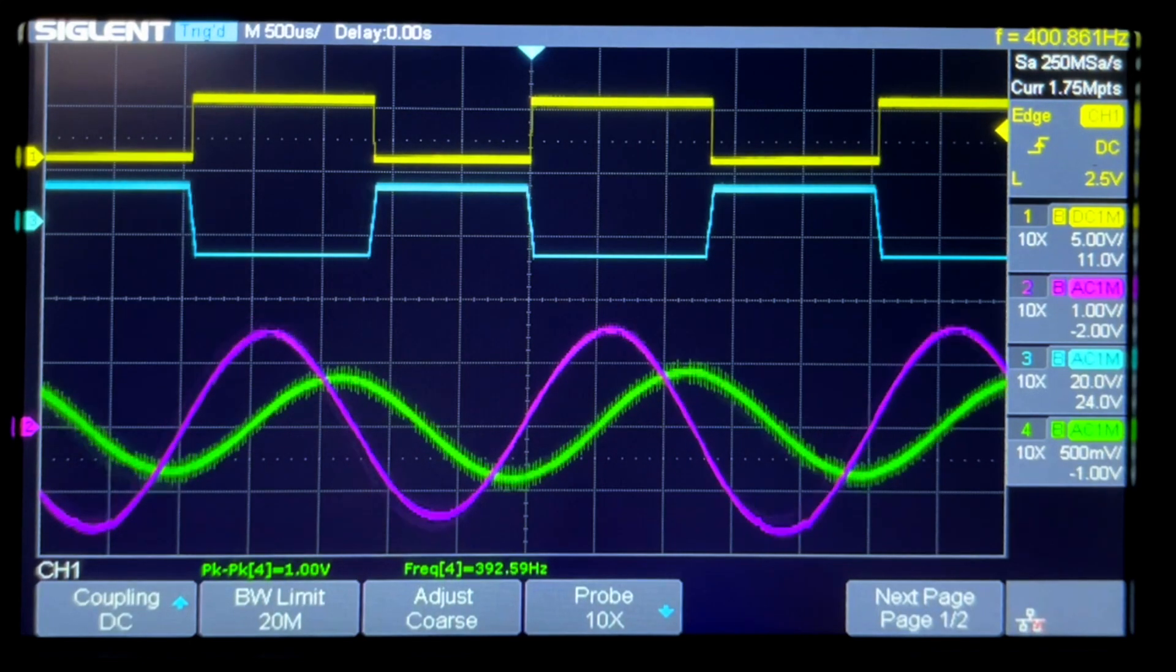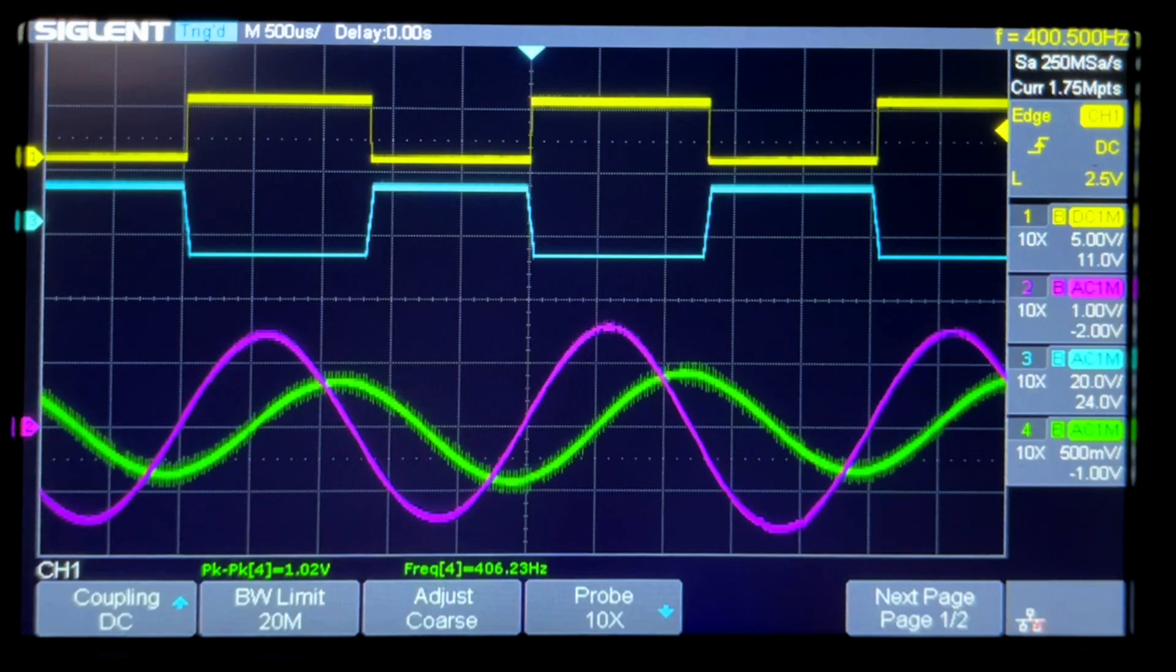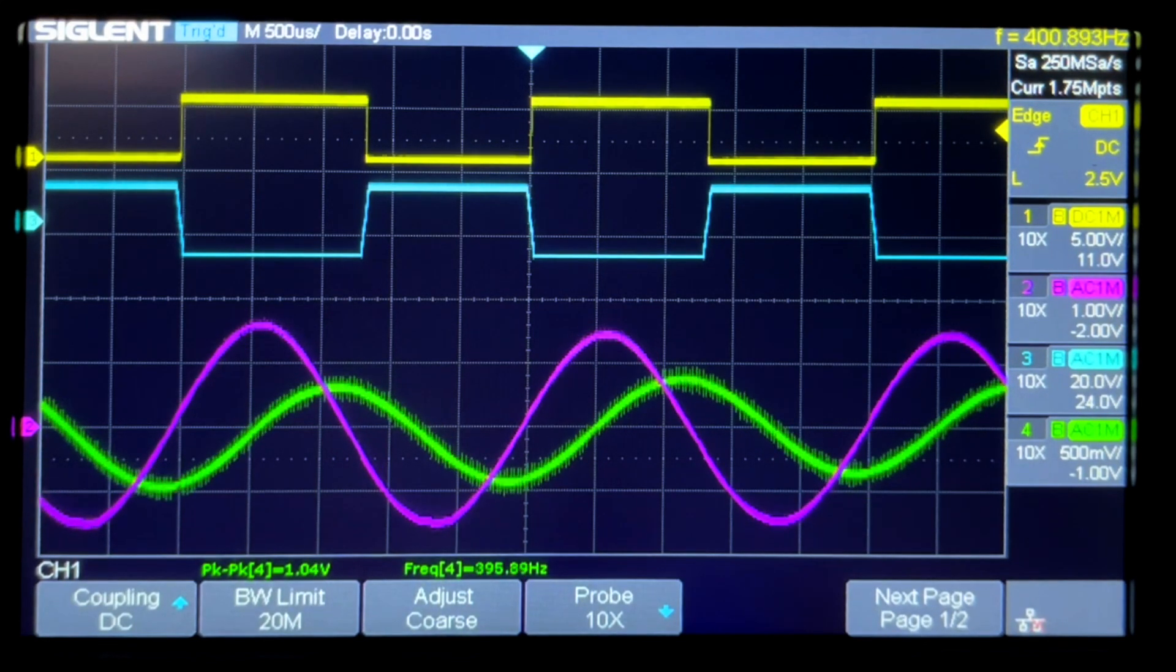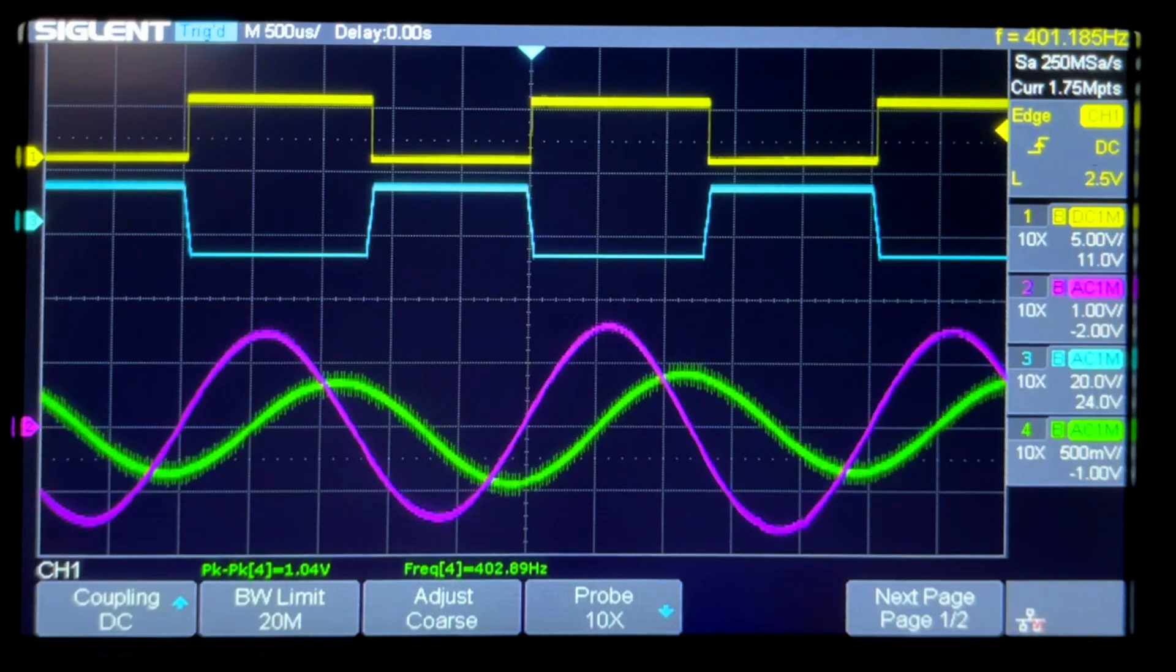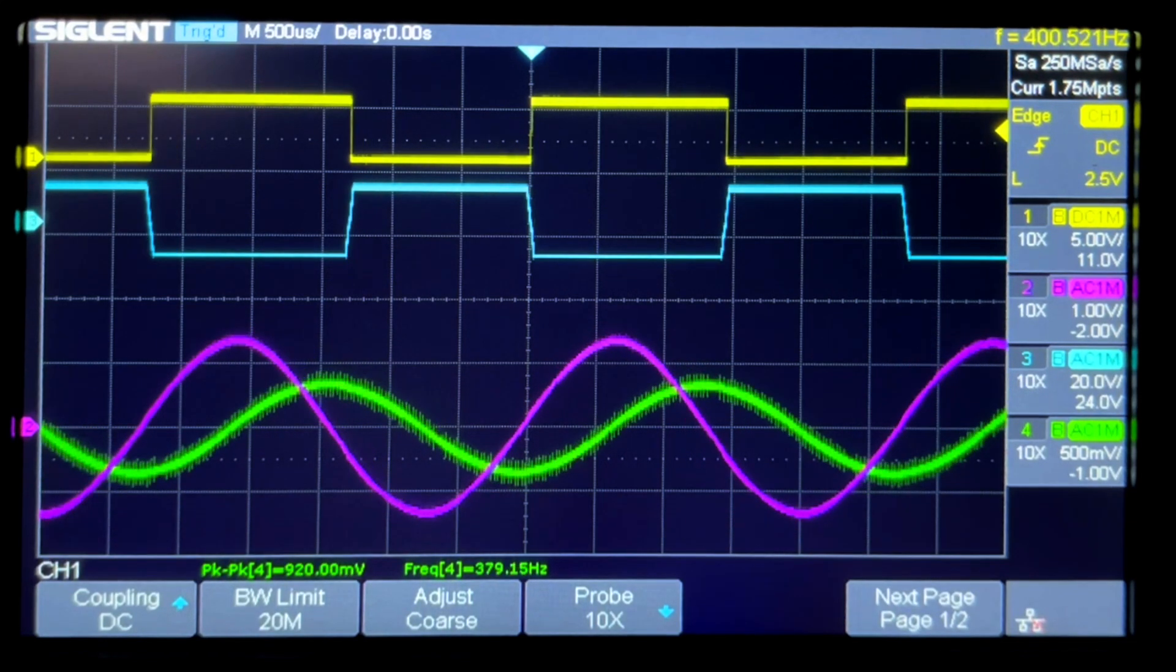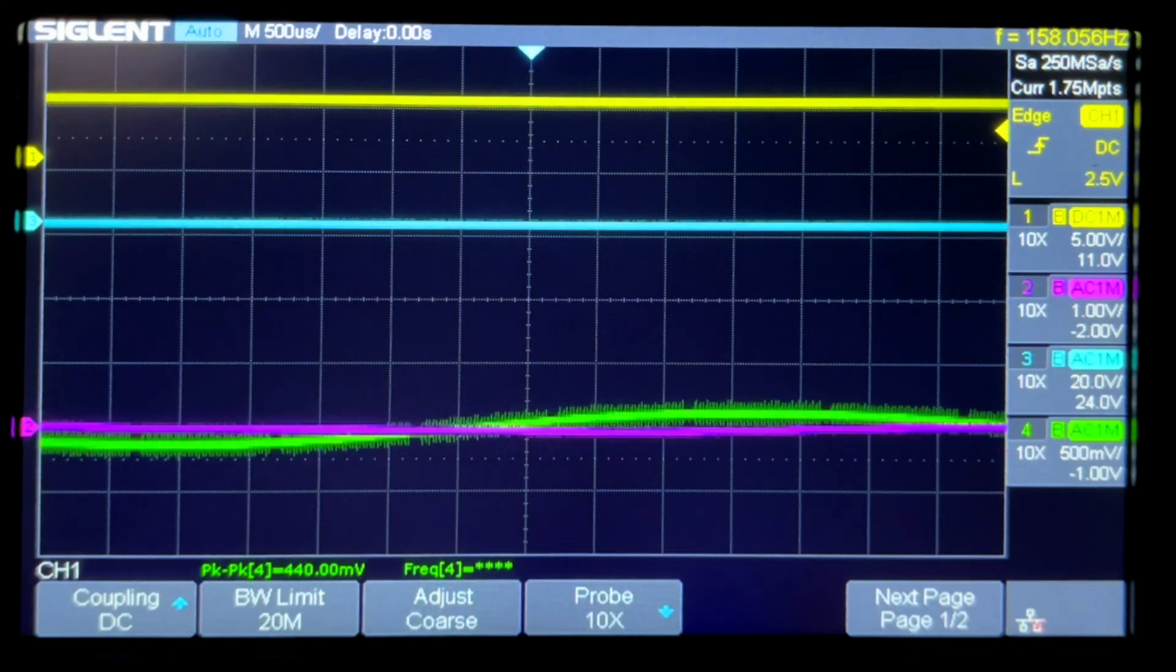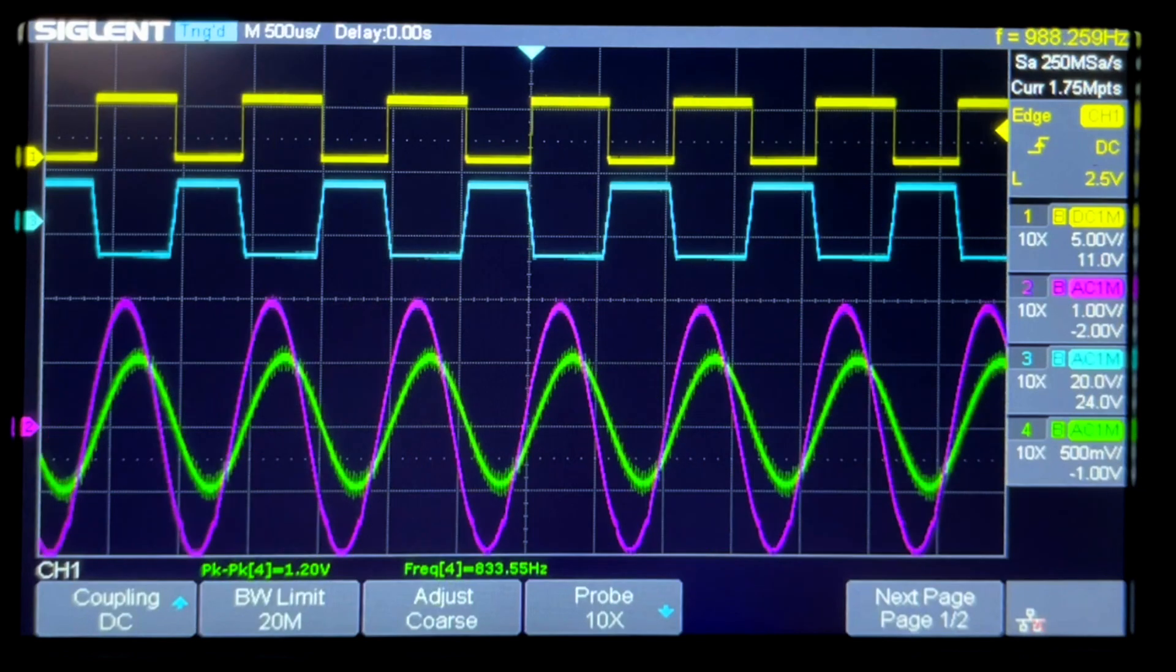Here we see the performance at 400 hertz which is 3.75 inches per second. You can see the green VR signal is all over the place and the magenta signal is not a whole lot better after filtering. The light blue is the output of the second op-amp which is an approximate square wave and of course the yellow is the final output which is fully squared off.